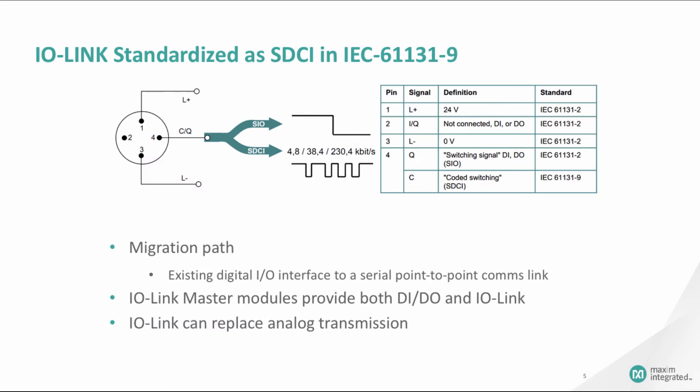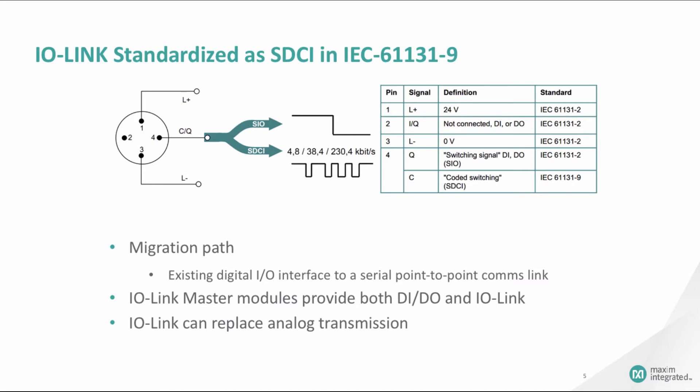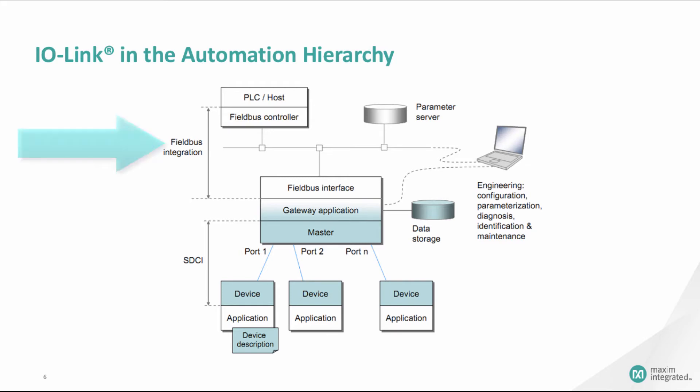The next step in sensor evolution is the IO-Link standard. IO-Link is officially known as the Single Drop Communication Interface, or SDCI. The IO-Link standard is IEC 61131-9. IO-Link sensors keep all of the best that binary sensors have to offer and add a bidirectional data line — the sensor can now send and receive information to or from the master. IO-Link masters provide both binary sensor and IO-Link communication, allowing IO-Link to be added to an existing system easily. When combined with gateway capabilities, this system can become a field bus IO node.